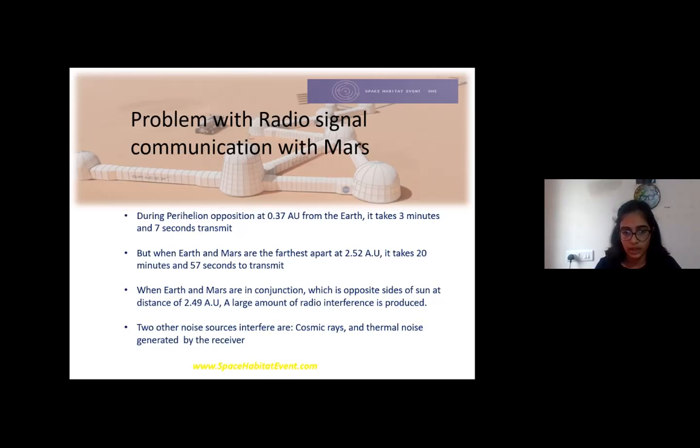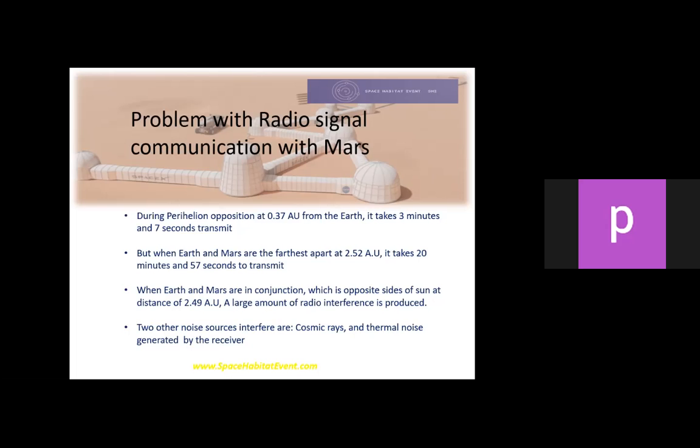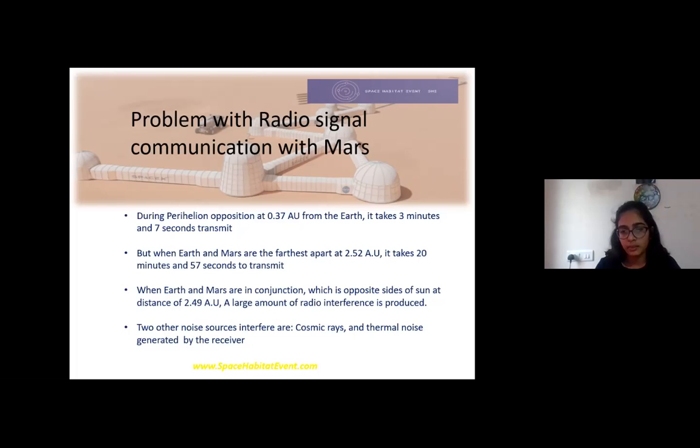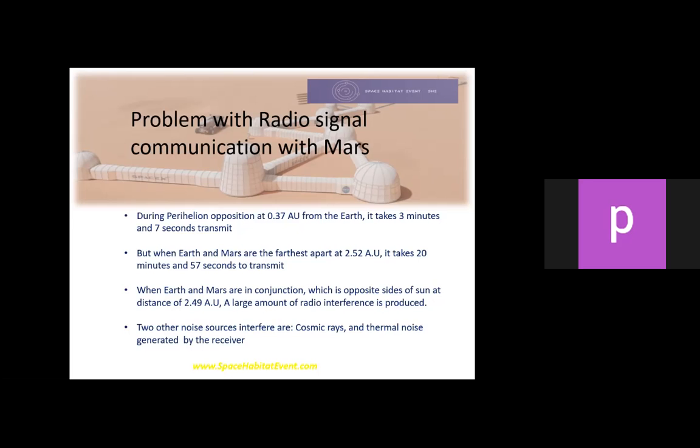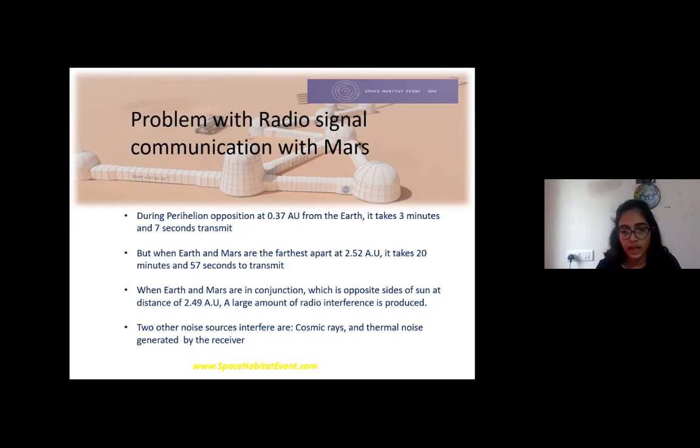The problem occurs when Mars and Earth are in conjunction position where they are on opposite sides of the Sun. During this time, radio interference from the Sun occurs. Because of this interference, receivers are not capable to decode the signal properly because it's amplified right before the receiver, and this amplifier adds noise to the signal. Other sources that add noise are cosmic rays and thermal noise from the receiver.